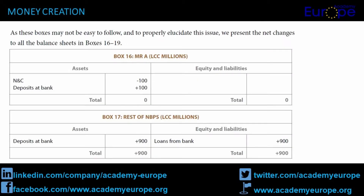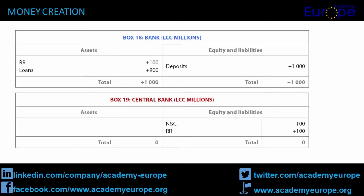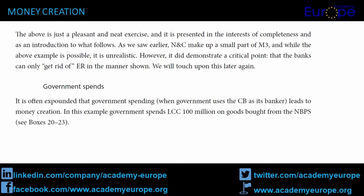It will be evident that the M3 creation of LCC 900 million was based on the loans made by the bank, and this could take place up to the point where ER = RR. The outcomes are shown in boxes 14 and 15. The above is just a pleasant and neat exercise, presented in the interests of completeness and as an introduction to what follows. As we saw earlier, NNC make up a small part of M3, and while the above example is possible, it is unrealistic. However, it did demonstrate a critical point: that the banks can only get rid of ER in the manner shown.